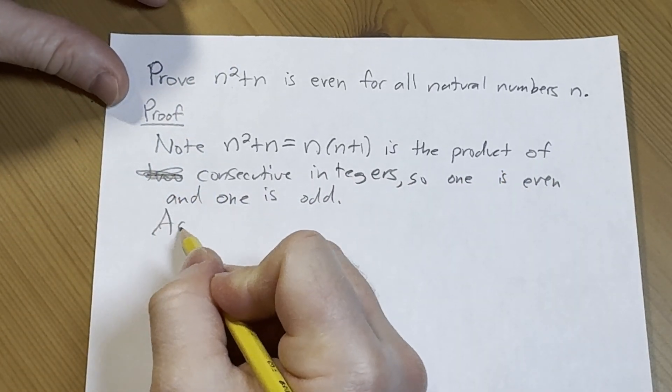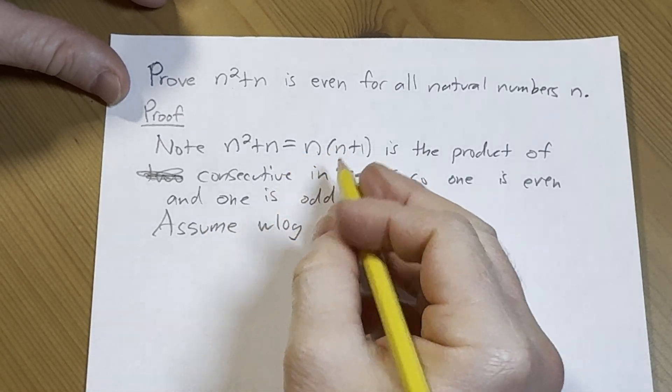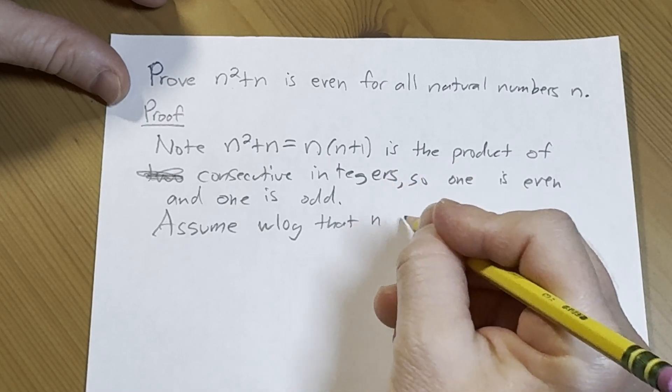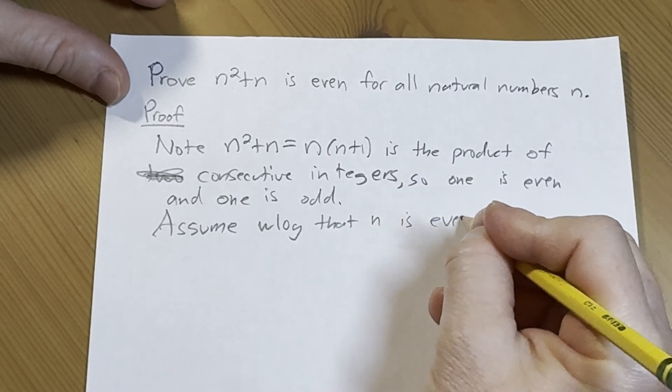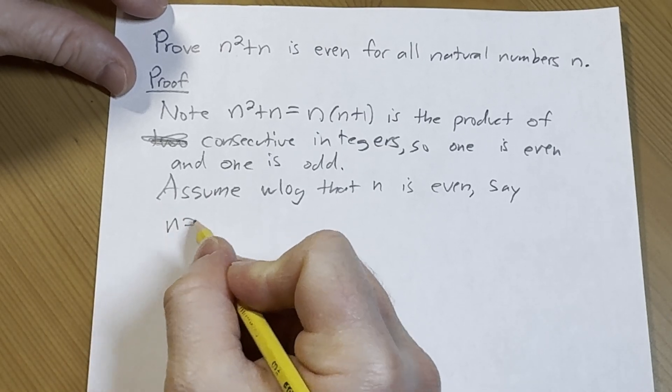So assume without loss of generality that n is even and say it's equal to 2k for some integer k.